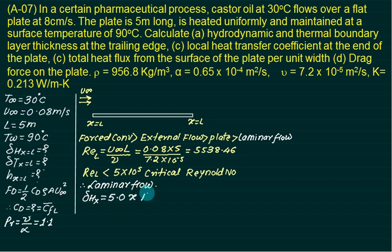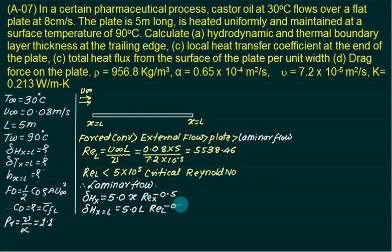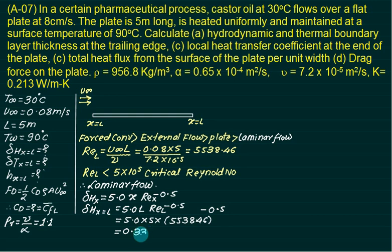The hydrodynamic boundary layer thickness at any distance x is given by: delta_hx = 5 × x × Rex^(−0.5). To find delta_h at x = L, we replace x with L: delta_hL = 5 × L × ReL^(−0.5). Substituting L = 5 meters and ReL = 5538.46, we get delta_hL = 0.3354 meters.